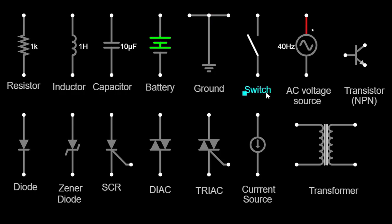A switch symbol resembles a simple break in a circuit line. It represents a device that can open or close a circuit, allowing or blocking the flow of current. Switches are used to control the operation of various electrical devices.